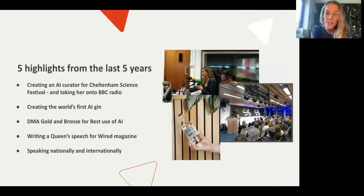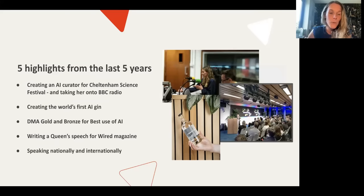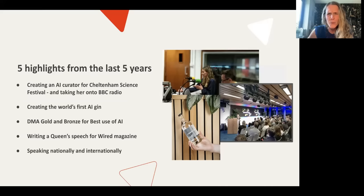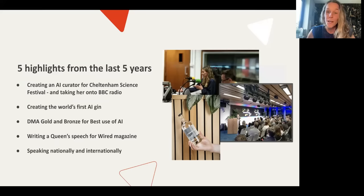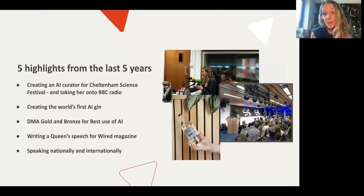We also won two awards for best use of AI in 2019 and 2020 — the DMA awards. If you're in the world of marketing, you'll know it was a pretty big deal for us as a startup, because we were up against the likes of Twinings Tea, The Times, and Twitter. I also wrote a Queen's Speech for Wired magazine — they asked me could I write one, gave me every Queen's Speech in text format, which I used to train a neural network and generated a version, which I then edited with my human abilities. You can still go and read the article — it's pretty bonkers.